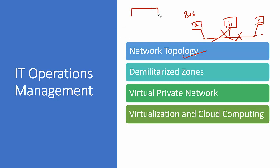In star topology, we have a switch at the center and all devices are connected to it. If the switch is down, everything is down — that is the risk of star topology. The next concept is the Demilitarized Zone (DMZ). A DMZ is created in the organization to protect the internal network from the external network. We place servers that provide public-facing communication — web server, SMTP server, email server, DNS server — in the DMZ.